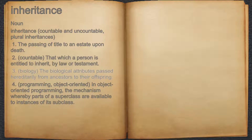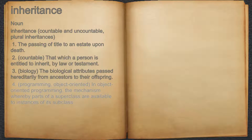3. Biology, the biological attributes passed hereditarily from ancestors to their offspring. 4. Programming, object-oriented. In object-oriented programming, the mechanism whereby parts of a superclass are available to instances of its subclass.